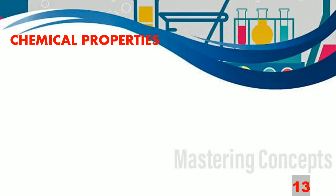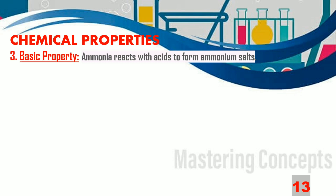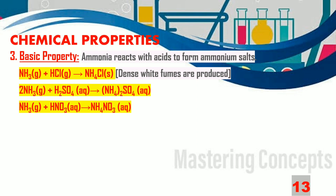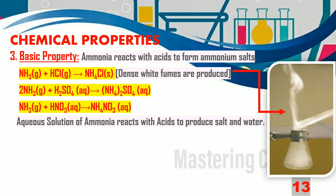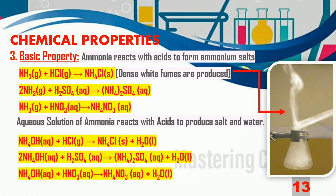Let us now talk about the basic property of ammonia gas. Ammonia gas reacts with acids to form ammonium salts. It reacts with hydrochloric acid to form ammonium chloride (NH4Cl), producing dense white fumes. Ammonia gas also reacts with sulphuric acid and nitric acid to produce ammonium sulphate and ammonium nitrate respectively. Aqueous ammonia (NH4OH) also reacts with these acids to form the same salts along with water — this is a neutralization reaction.